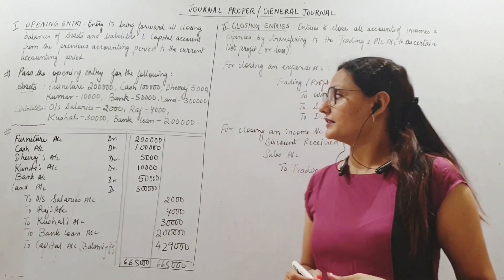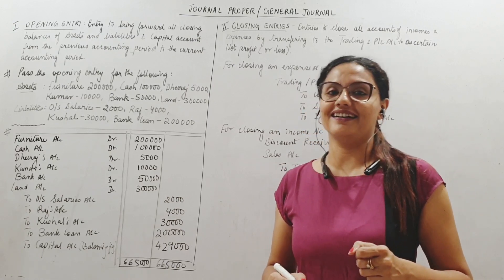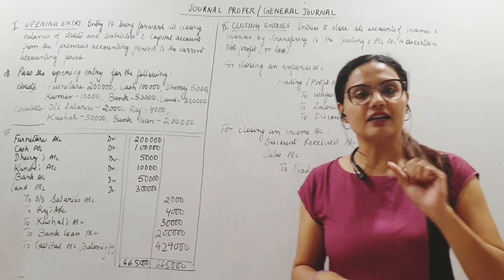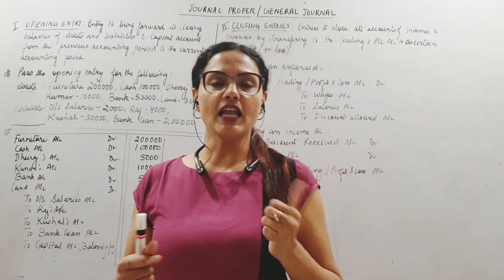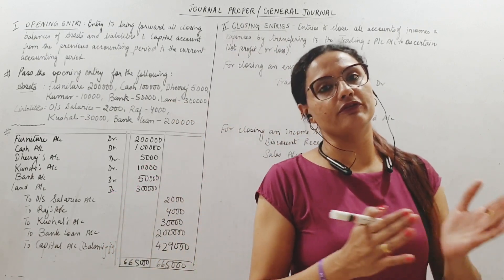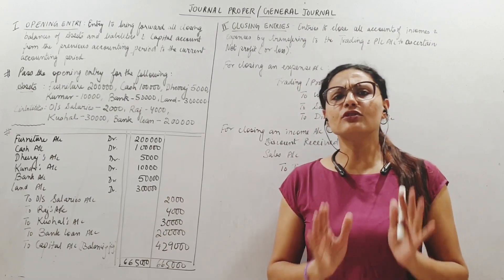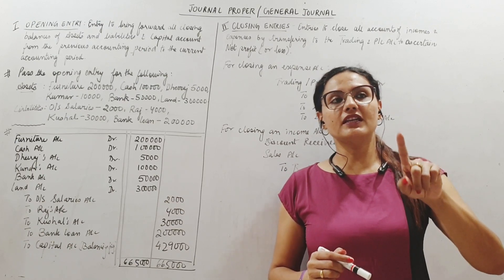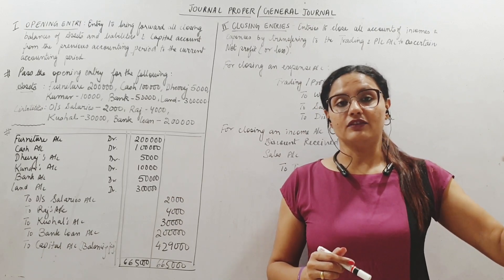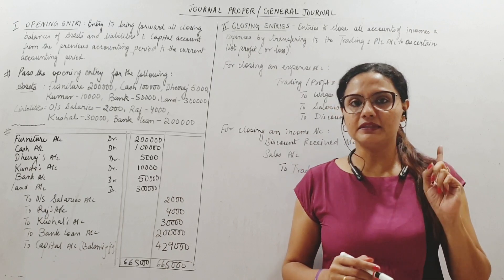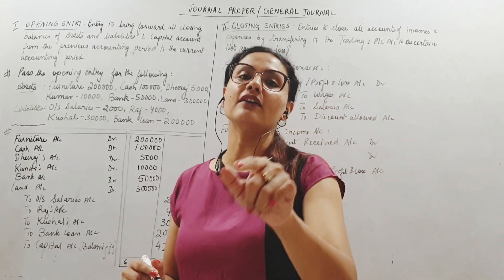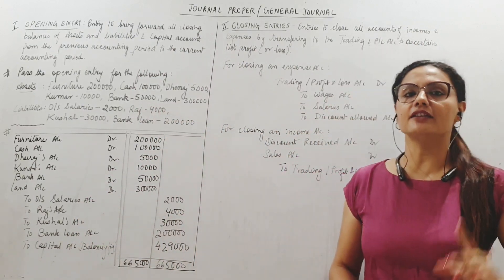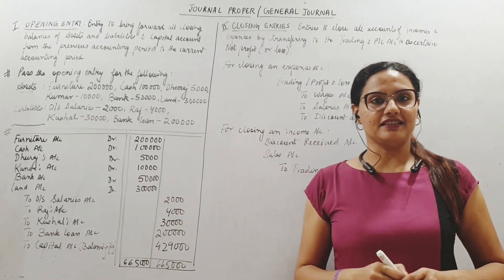Liabilities: Outstanding salary. Salary is expense, so outstanding salary is due. Salary is due but not paid. Suppose March salaries - people have worked in March and you pay them on 1st of every month, so 1st April you will pay or maybe 1st week of April. So on 31st March, March salary is due, correct? That March period is of the last year. So that salary is of the last year which you haven't yet paid. So isn't it a liability?